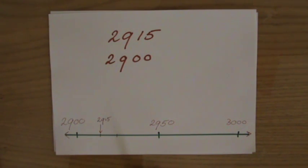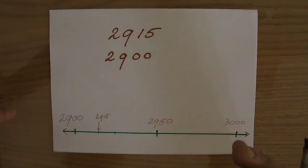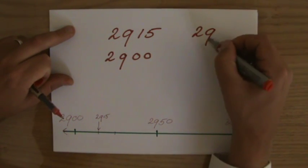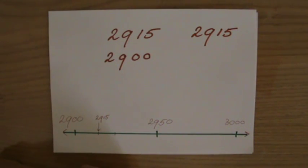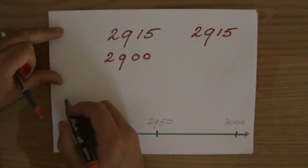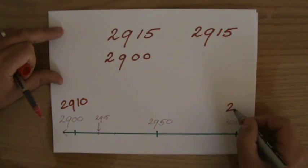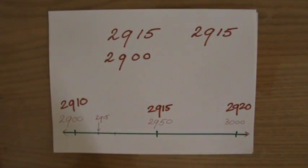Now, I want to give you one more example, and I'll do it on the same number line, if we would round it to the nearest 10. So 2,915 to the nearest 10. Then I'll have 2,910 on this side, 2,920 on that side, and exactly in the middle, 2,915 to the nearest 10.